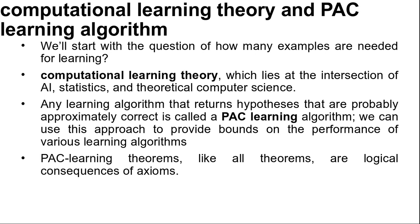The underlying principle is that any hypothesis that is seriously wrong will almost certainly be found out with high probability after a small number of examples, because it will make an incorrect prediction. Thus, any hypothesis that is consistent with a sufficiently large set of training examples is unlikely to be seriously wrong, that is, it must be probably approximately correct. That is our PAC. Any learning algorithm that returns hypotheses that are probably approximately correct is called a PAC learning algorithm, and we can use this approach to provide bounds on the performance of various learning algorithms.